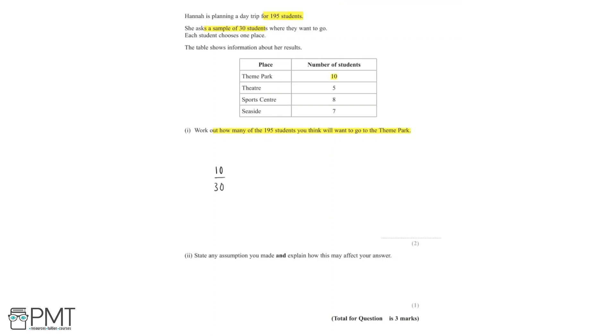And now to find how many of the 195 students you think will want to go to the theme park, we need to multiply both the numerator and the denominator by 6.5, because 30 multiplied by 6.5 is equal to 195. And so we'll end up with 65 out of 195.